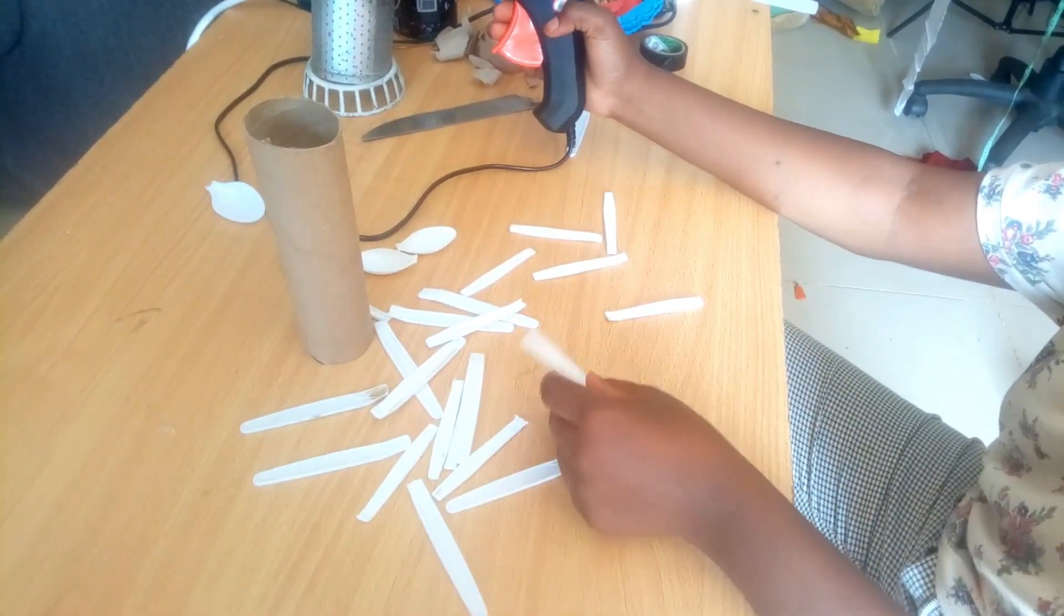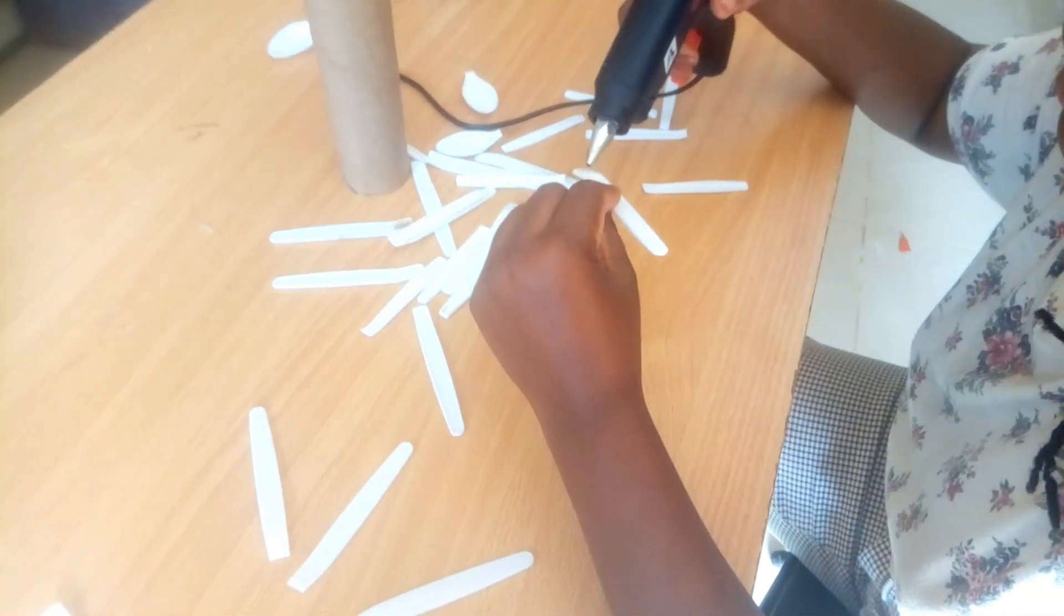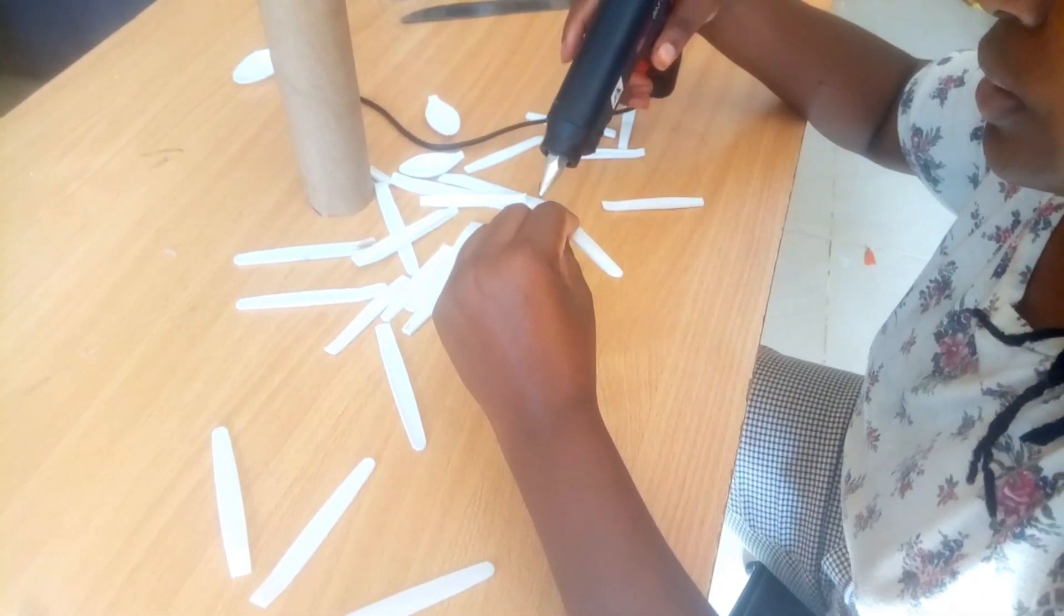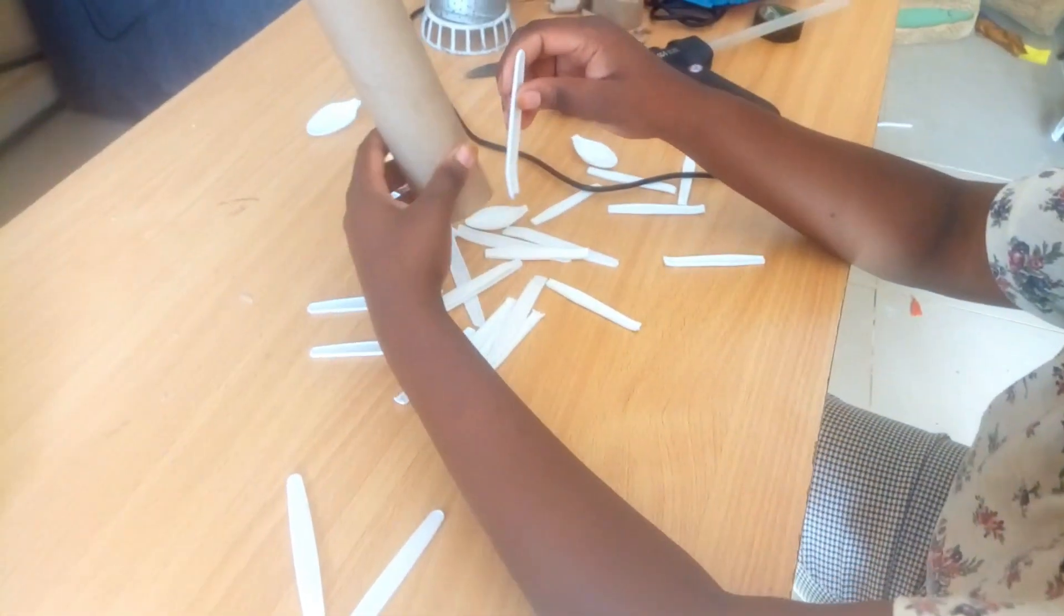And this time, if you haven't watched the previous DIY where I used spoons, kindly go back and watch. Because today we're going to use these spoon holders to make a decoration, a pen holder with these handles.